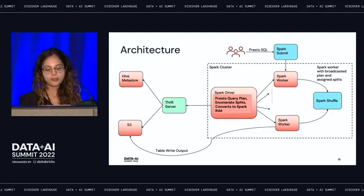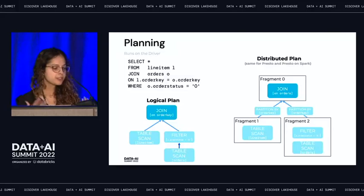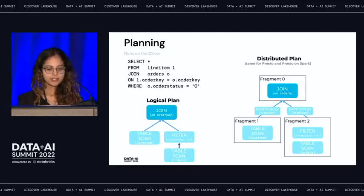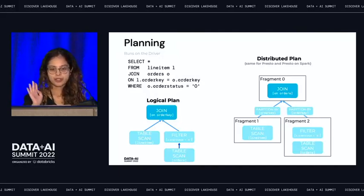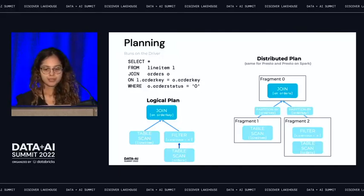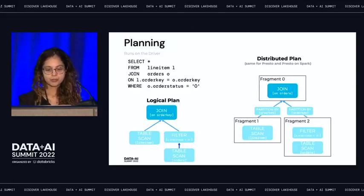Let's look at the Presto query plan. The Presto query planner runs on the driver. For a simple join query on two tables, what you see on the left is the logical plan and what you see on the right is the Presto distributed plan. The fragment here represents the Presto stage of execution, and here you're doing a redistribution on the order key.